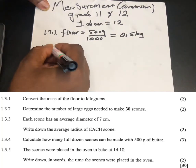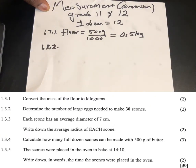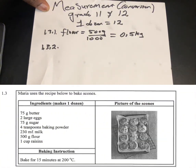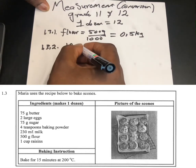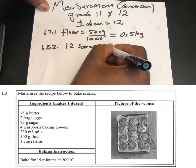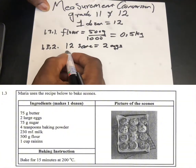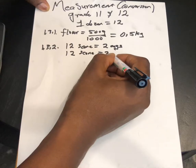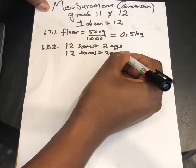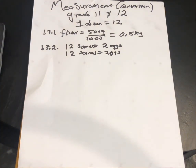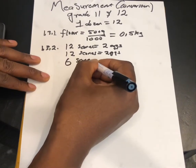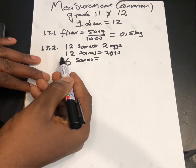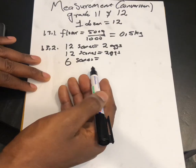Question 1.3.2: determine the number of large eggs needed to make 80 scones. From the ingredient, 12 scones need 2 eggs, and another 12 will need 2 eggs again, so each dozen requires 2 eggs. 12 plus 12 gives us 24, and 80 minus 24 — continuing in groups — we eventually remain with 6, which is half of 12. If 12 needs 2 eggs, then 6 needs 1 egg.